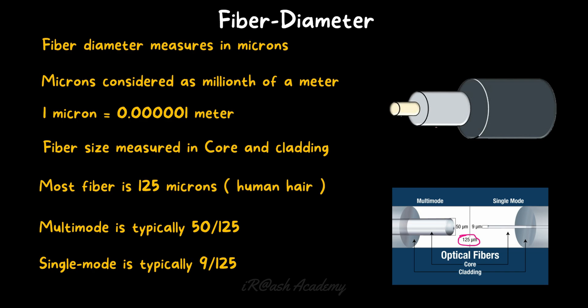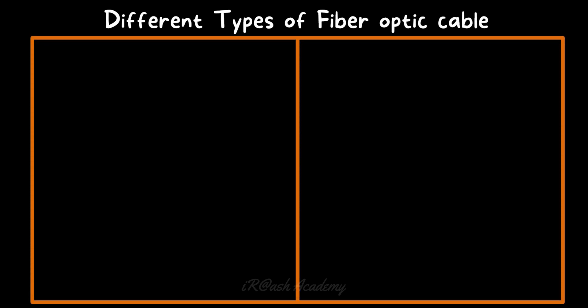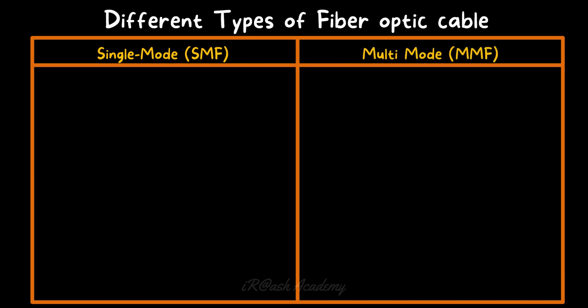Multi-mode fiber has a core diameter of 50 microns, while single-mode fiber has a core diameter of 9 microns. This means single-mode fibers are much thinner than multi-mode fibers. Because of this, single-mode fibers are more easily breakable, so you must handle them with great care to avoid breaks that could cause inefficient data transfer and data loss. There are two types of fiber optic cable: single-mode fiber (SMF) and multi-mode fiber (MMF).